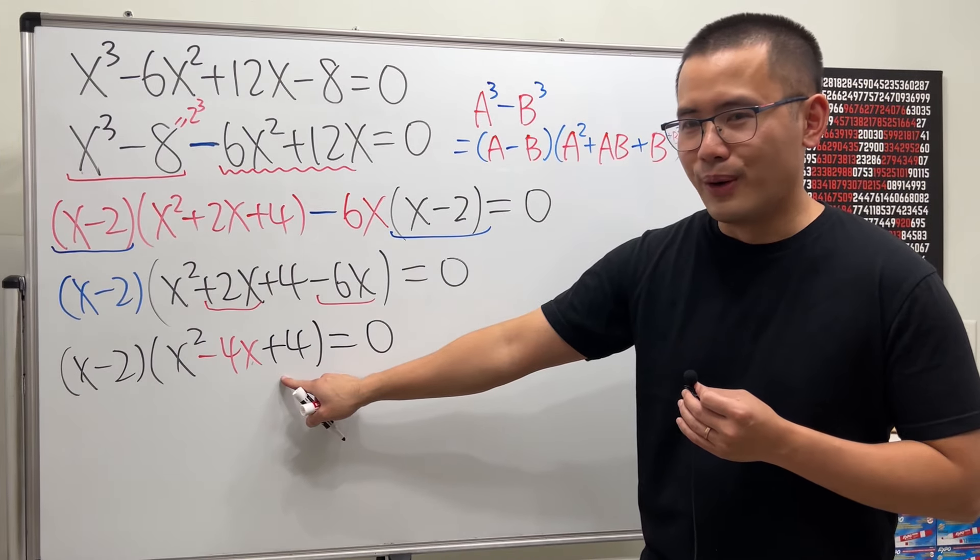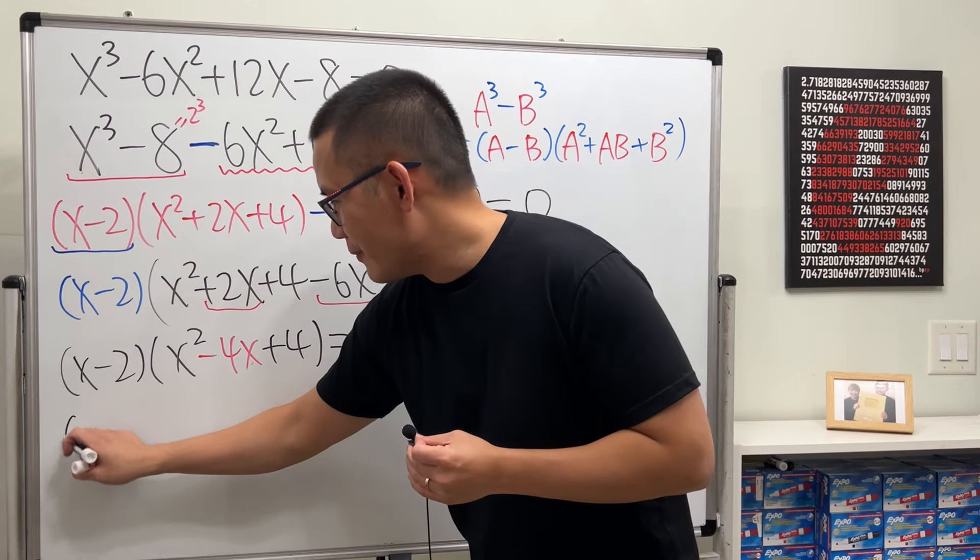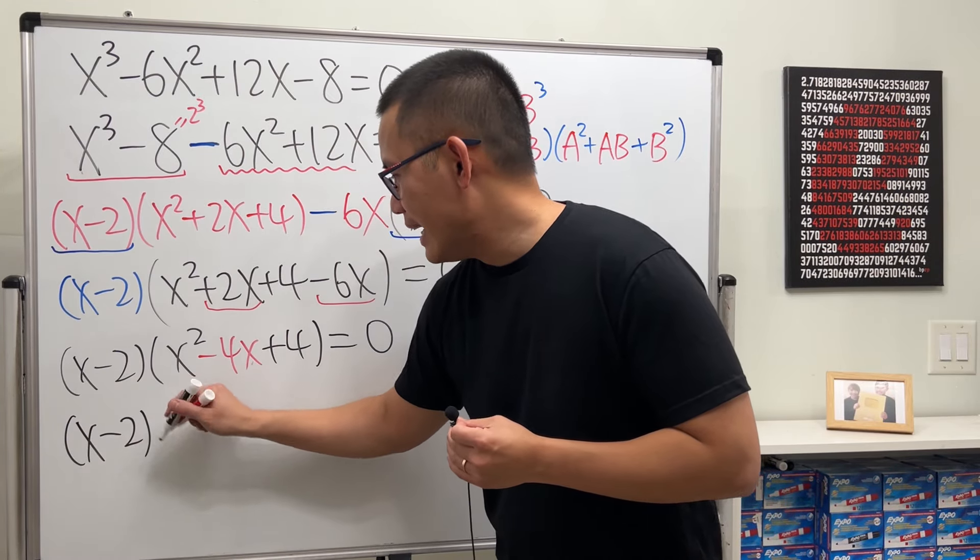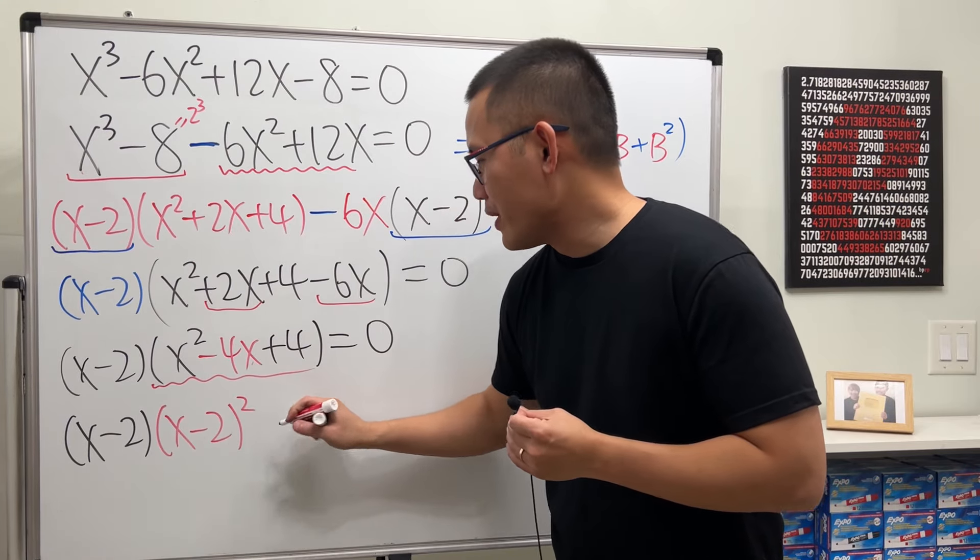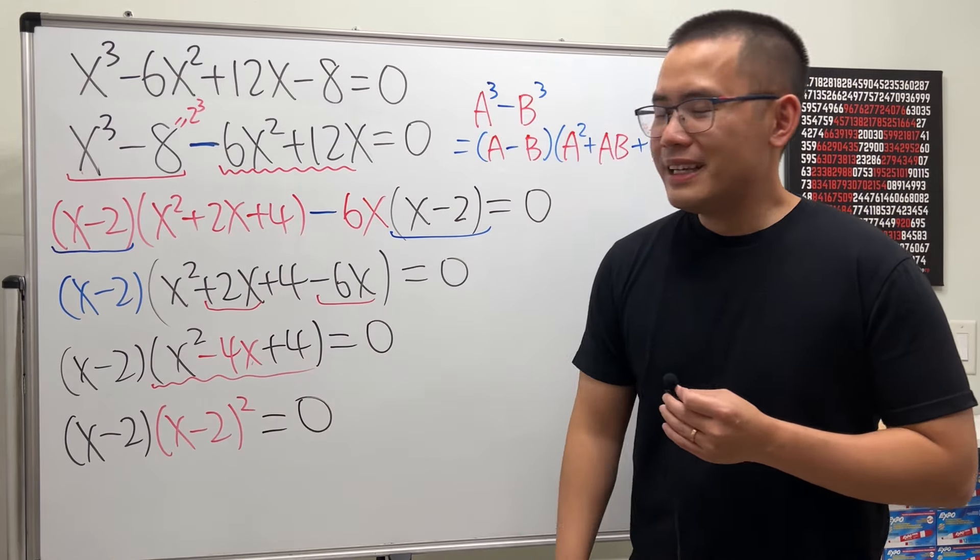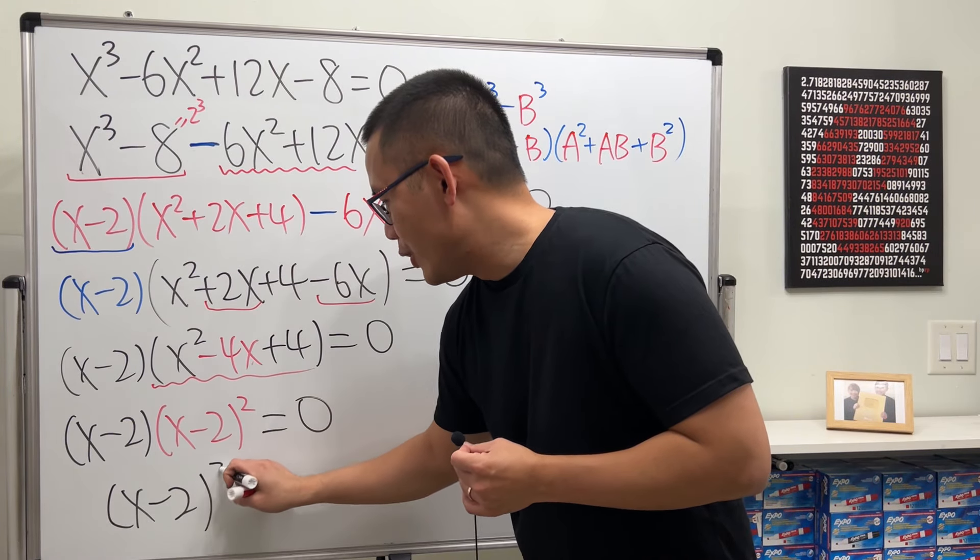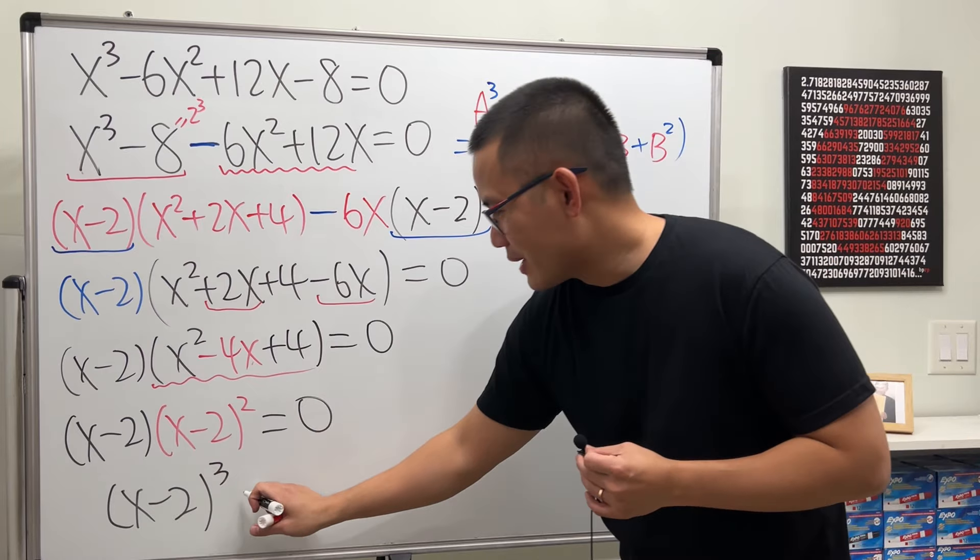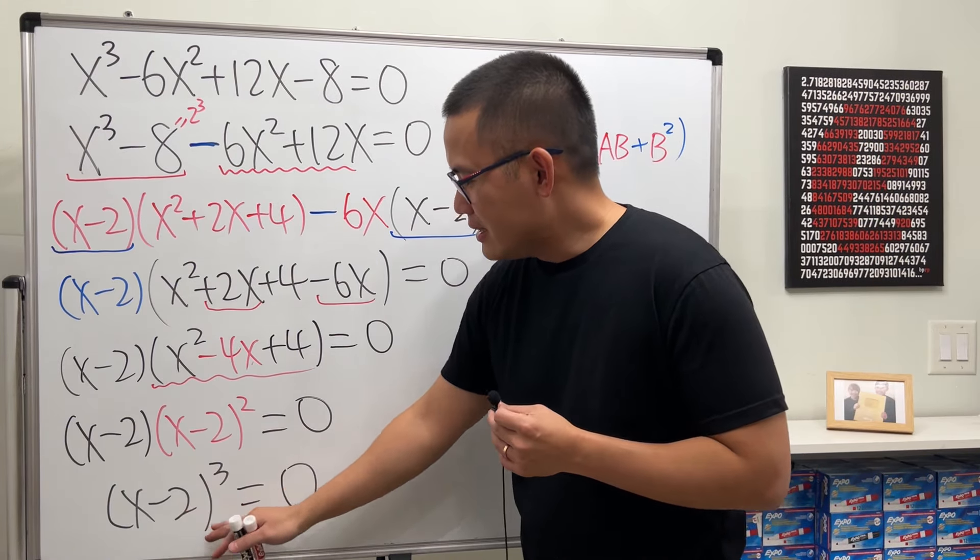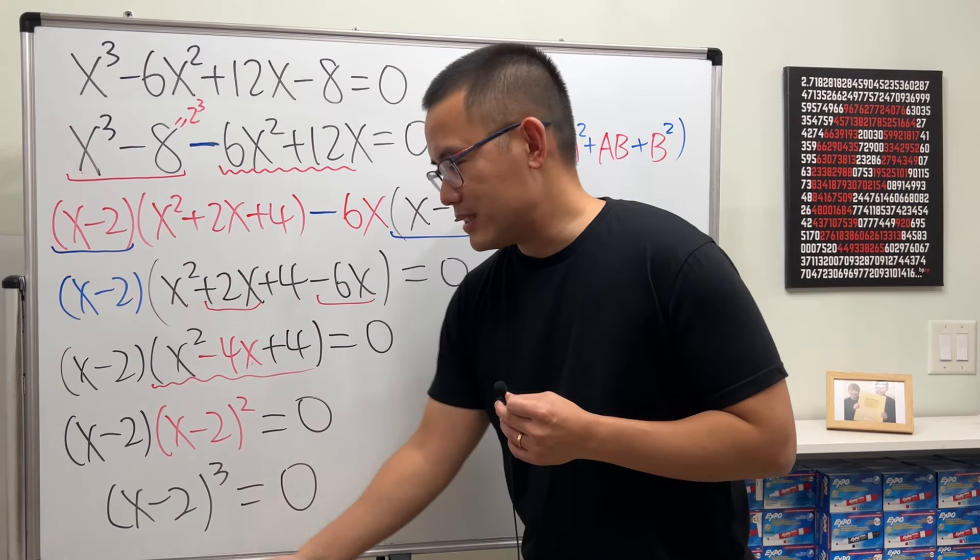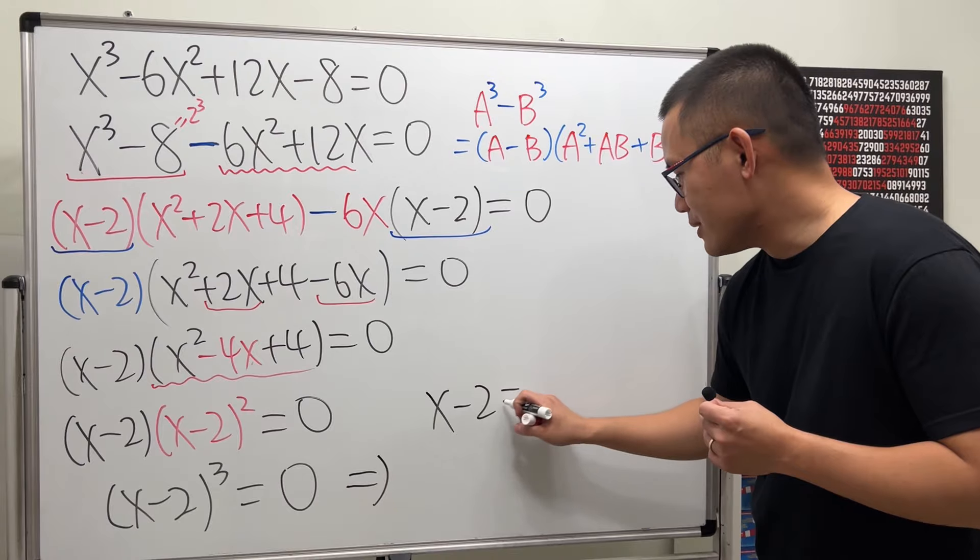In fact, this right here is factorable. If you factor it, you get x minus 2, x minus 2. So, this is x minus 2. And this gives us x minus 2 squared. So, in fact, we have x minus 2 cubed. This right here is equal to 0. So, the only way for this to equal 0 is for the inside to equal 0. So, that means x minus 2 is equal to 0.